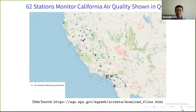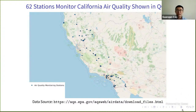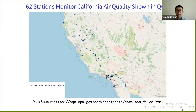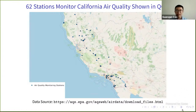I used 2016 California data for our analysis, obtained from the U.S. Environmental Protection Agency website. In total there are 62 stations monitoring air quality in California. I exported the coordinates to a GeoJSON file and displayed them on a map using QGIS, a geospatial data visualization tool. You can see the stations are scattered in the metropolitan areas within California.